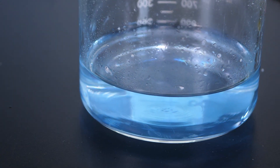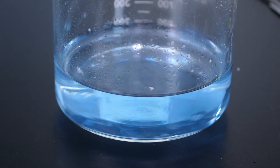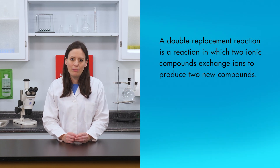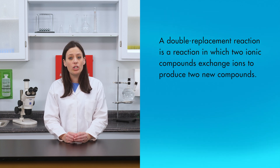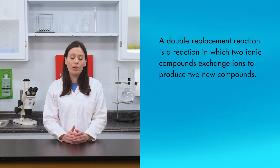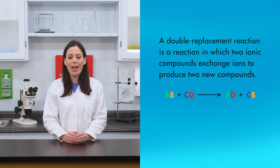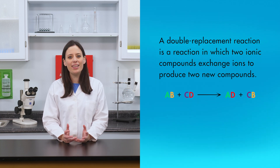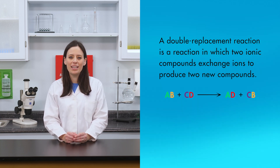Potassium replaced hydrogen to form potassium hydroxide. The second type of chemical reaction we will observe in this lab is called a double replacement reaction. A double replacement reaction is a reaction in which two ionic compounds exchange ions to produce two new compounds. The general form for a double replacement reaction is AB + CD → AD + CB.